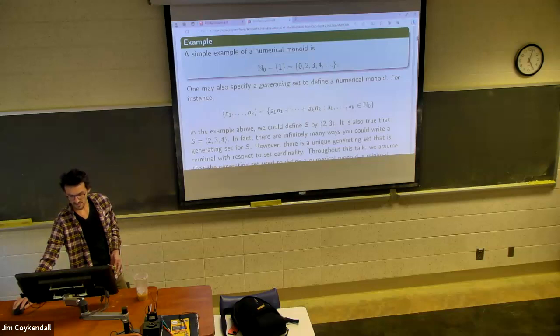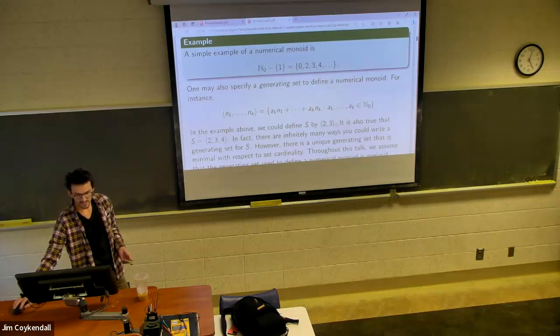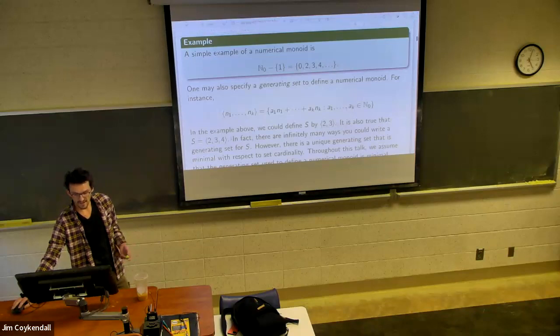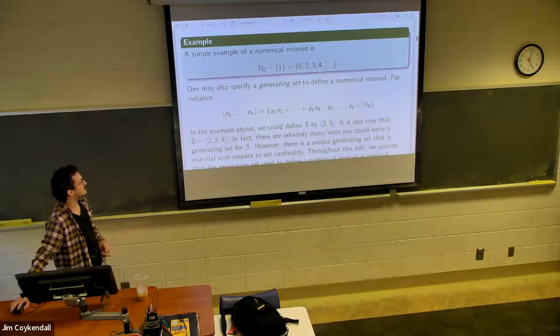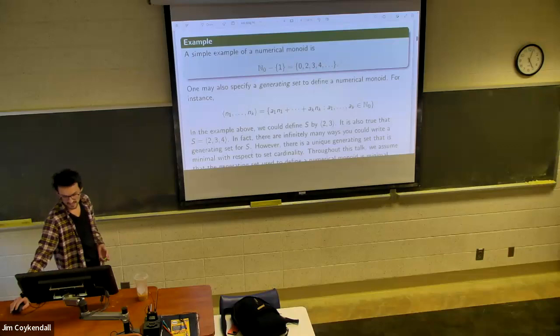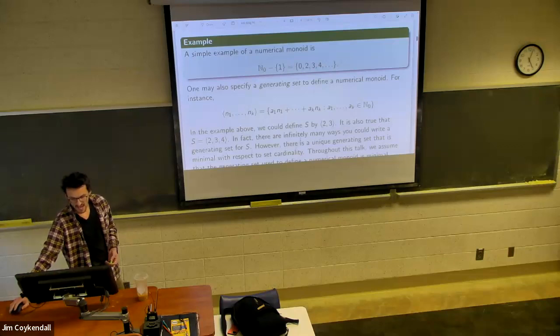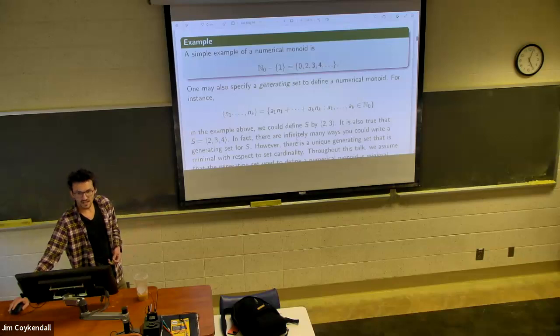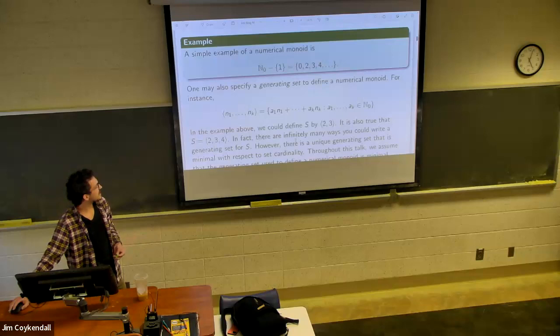So for this monoid here in our example, we could define it by 2, 3. We could define it by 2, 3, 4. In fact, there's infinitely many ways you could specify a generating set. Fortunately, there is a unique generating set that's minimal with respect to set cardinality. And we just assume that when we're defining these numerical monoids, we just assume it's minimal.